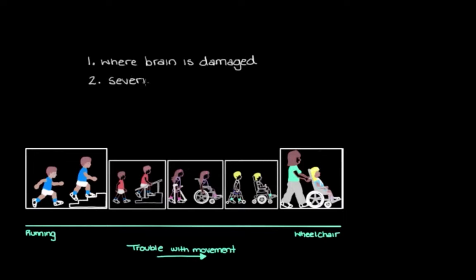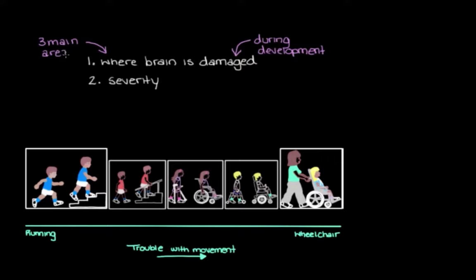This damage occurs because of some event like an infection or a stroke that happens during really critical periods of early development — anywhere from in utero as a fetus to the first few years of life. There are three main movement areas in the brain that, when damaged or impaired, can cause cerebral palsy. Depending on which movement area is primarily affected, that determines what type of cerebral palsy the person has, because cerebral palsy is actually an umbrella term that describes a few different disorders that affect movement.